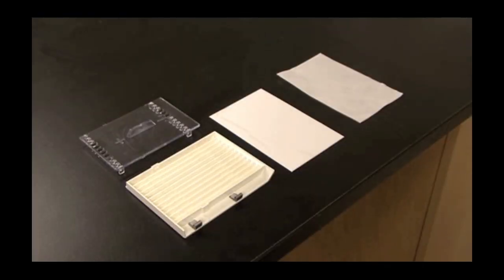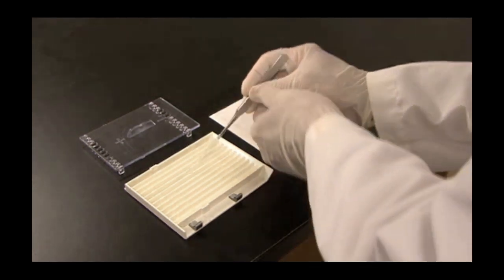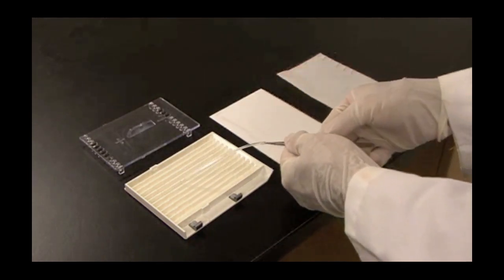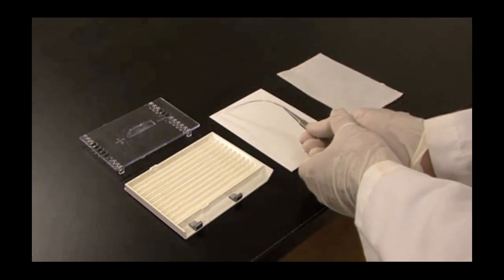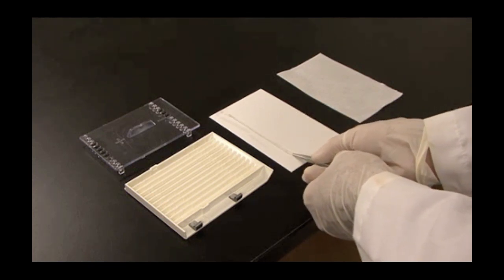Prior to equilibration, I will remove the IPG strip from the focusing tray and blot the excess oil off of the strip. First, pick up one end of the IPG strip, turn it over so the gel side is up, and place the IPG strip gel side up on a dry piece of filter paper.